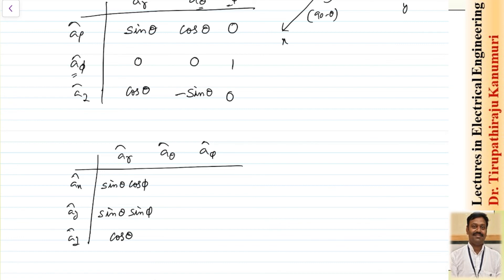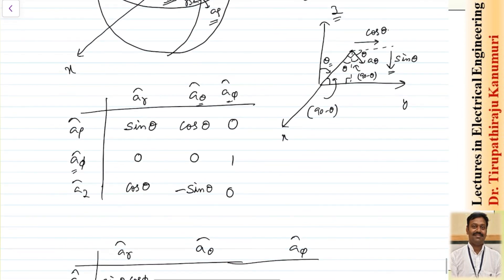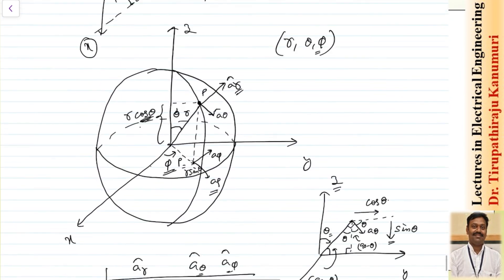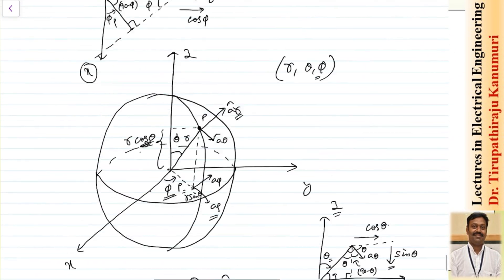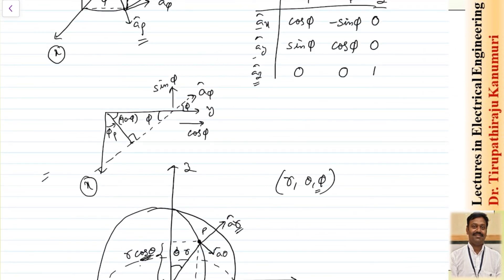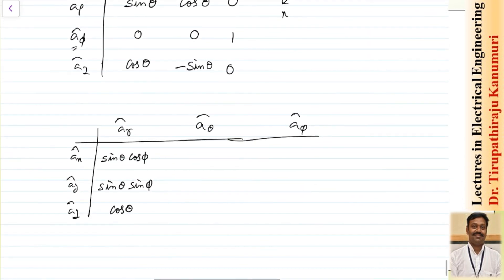For a_phi: since phi is the same as in the cylindrical coordinate system, the x-component is −sin(phi), the y-component is cos(phi), and the z-component is 0.